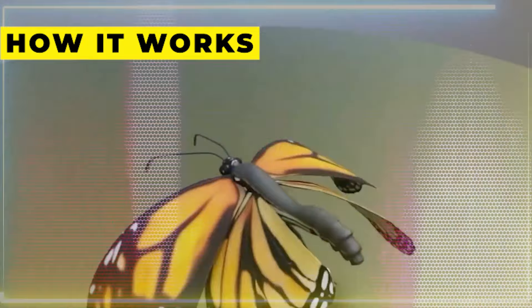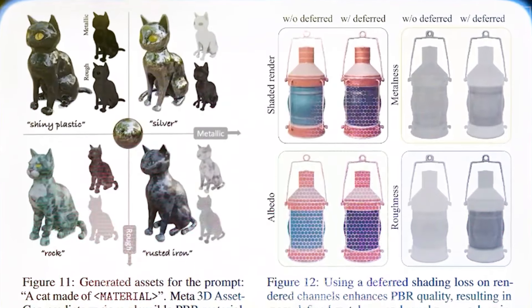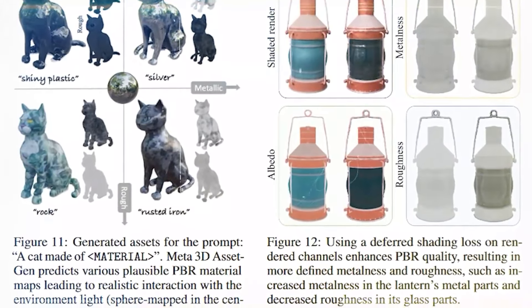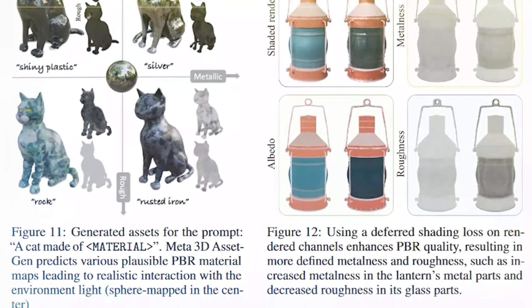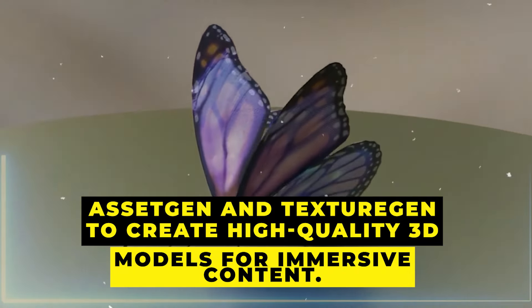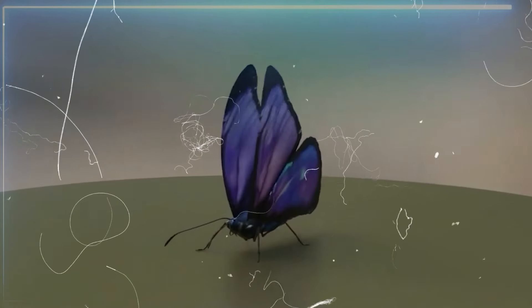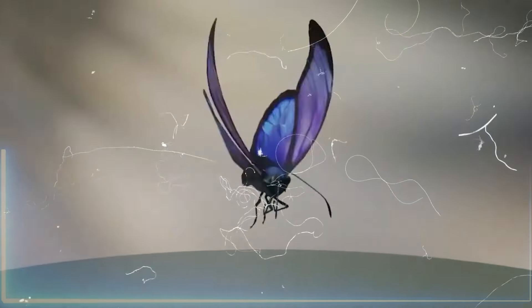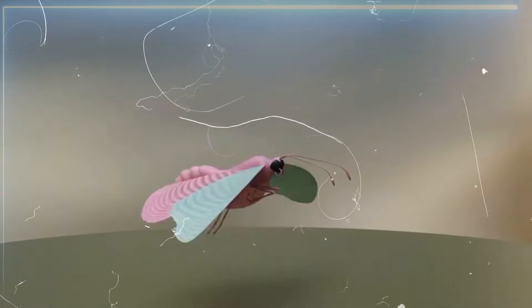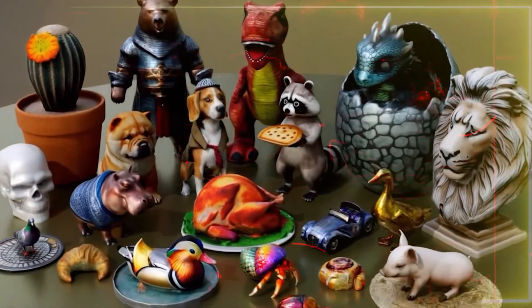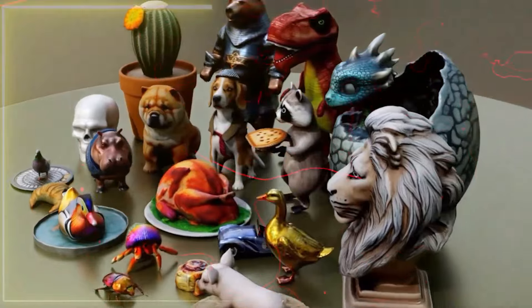Meta's 3D Gen employs a two-stage method that takes advantage of the features of two fundamental generative models — Asset Gen and Texture Gen — to create high-quality 3D models for immersive content. With this method, the two models divide up the work, with each concentrating on one specific aspect of the 3D development process, allowing for better control and customization, much like how text-to-image generators work.